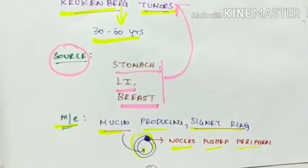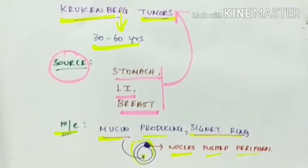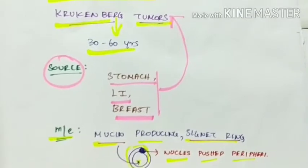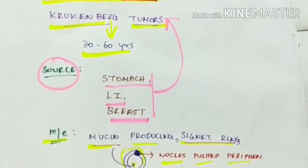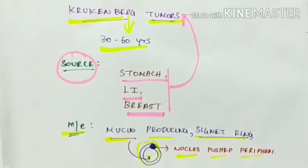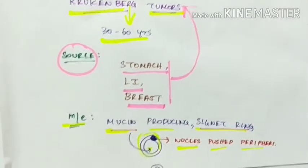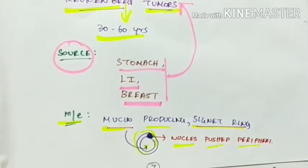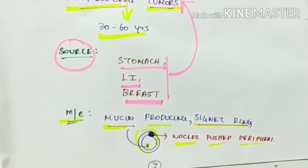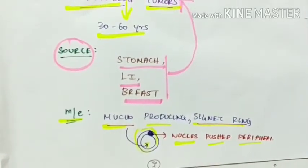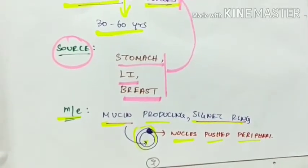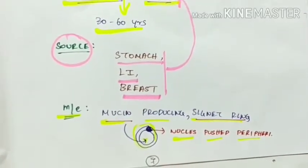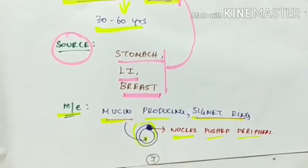So these are about the ovarian tumors. The ovarian tumors include surface epithelial tumors, sex cord stromal tumors, germ cell tumors, and metastatic cancer.